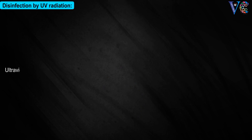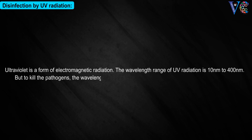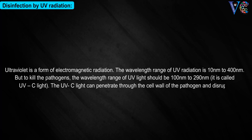Disinfection by UV radiation. Ultraviolet light is a form of electromagnetic radiation. The wavelength range of UV radiation is 10 nanometers to 400 nanometers. But to kill the pathogens, the wavelength range of UV light should be 100 nanometers to 290 nanometers — this is called UV-C light. The UV-C light can penetrate through the cell wall of the pathogen and disrupts the nucleic acid content, thus killing the pathogens.